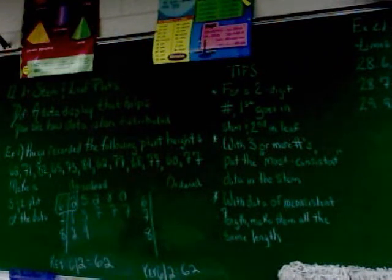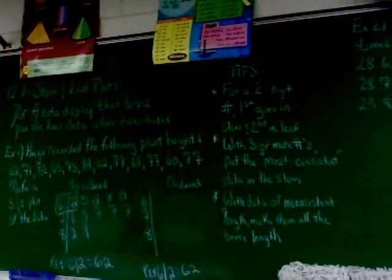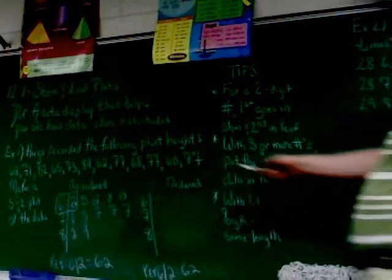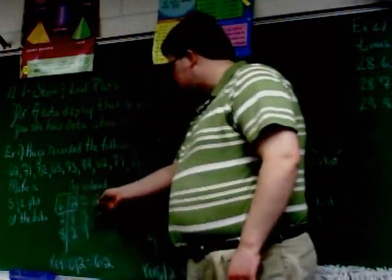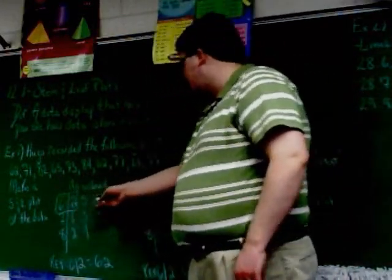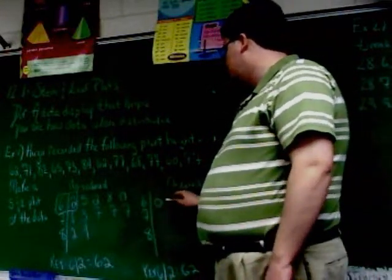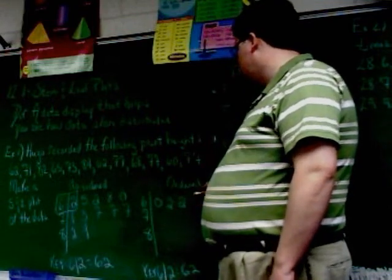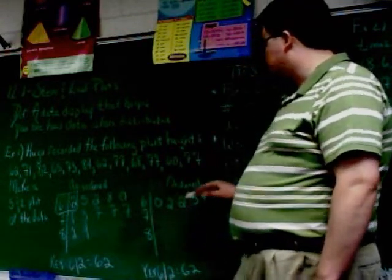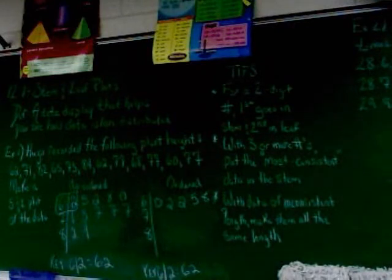Now, in the ordered stem and leaf plot, the only difference is the leaves have to go in order. It's not like it's a major change. You've still got the 6, 7, 8. The difference is this list goes in order now. So, instead of 25280, put it in numerical order from least to greatest. It's going to go 0, 2, 2, 5, 8. And the main reason for doing that is to make it easier to find the median. Other than that, there's not a significant reason for that.